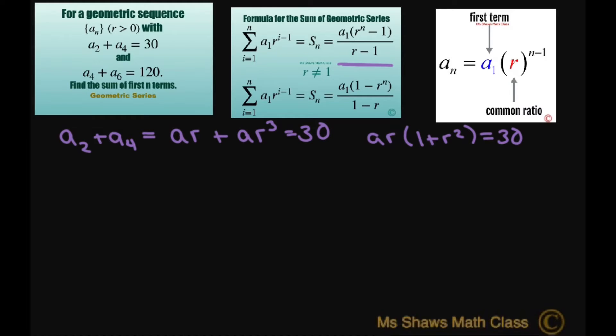Now let's look at this second one. We have a₄ plus a₆. So that means our fourth term is really the first term, and then you keep multiplying by the common ratio three times. And the sixth term would be a times R to the power of 5. And this equals 120. Now let's go ahead and factor out aR³, and our quantity here would be 1 plus R² equals 120.